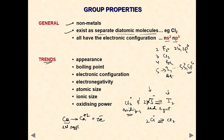When electrons are accepted, the oxidizing agent is reduced. In the case of halogens, they are non-metals and always accept electrons. This is why chlorine and other halogens act as oxidizing agents.